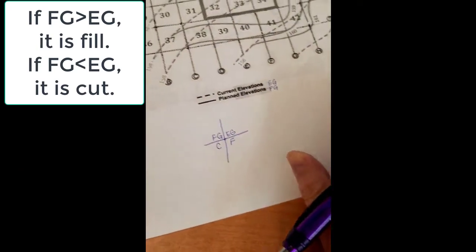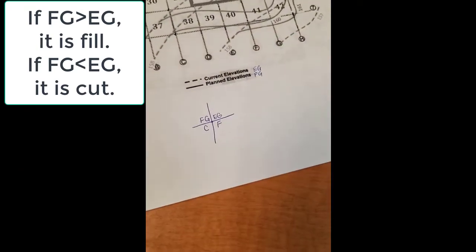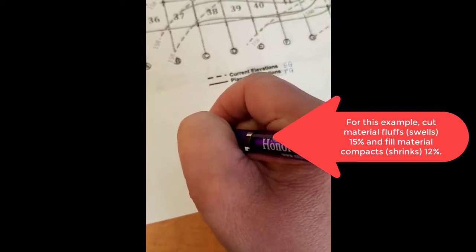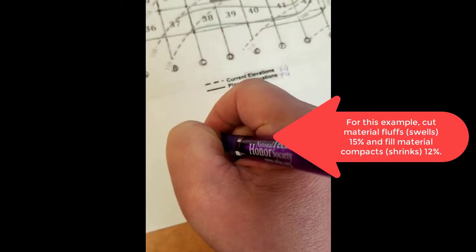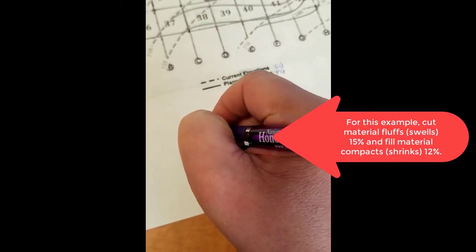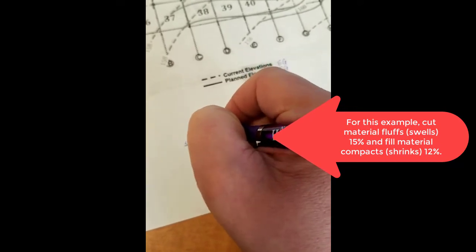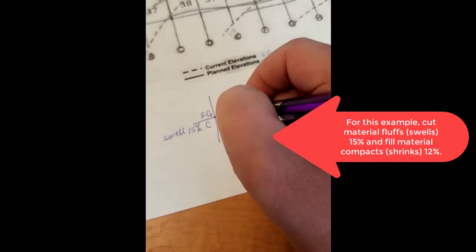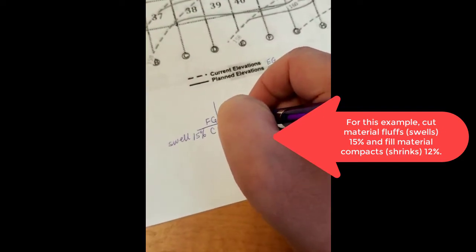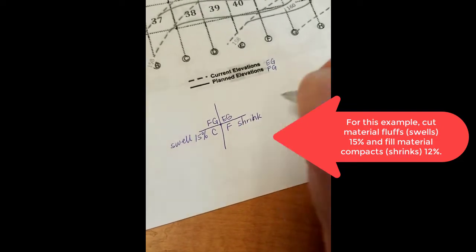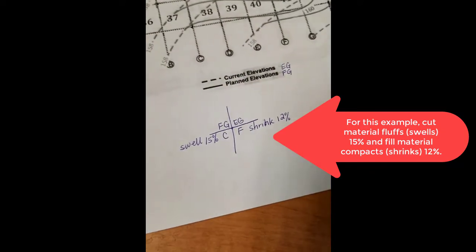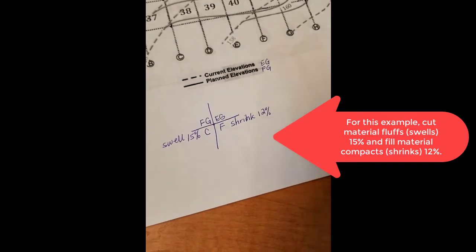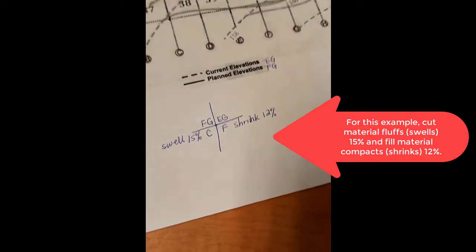You also need to know what your swell factor is. When you take it out of the ground, for this demo it's going to swell 15%. And if there's a fill, then it is going to shrink 12% when we compact it, going from the truck to the ground and then compact it. It'll shrink a little bit less than it swells, and that's pretty typical.